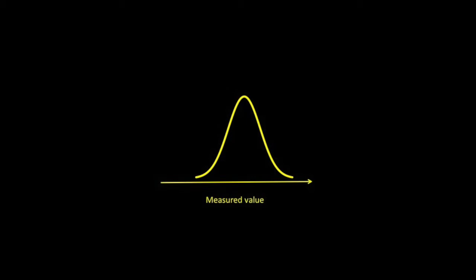In general, we graph our measurements with the measured value on the horizontal axis and the frequency that a given value is observed on the vertical axis. If we record a very large number of measurements, perhaps hundreds, then the data will be symmetrically distributed about the average.